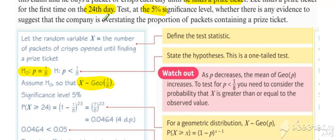We are testing to see whether the company is overstating the proportion. So therefore, the counter-argument to our null hypothesis is p is less than one-eighth.